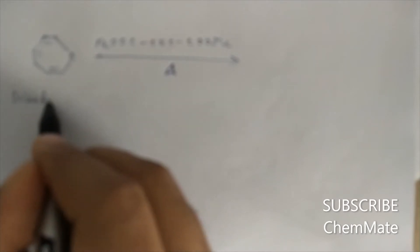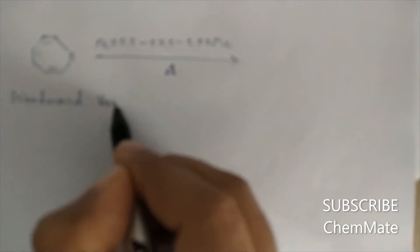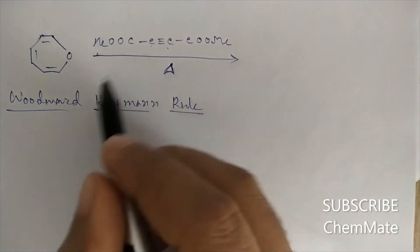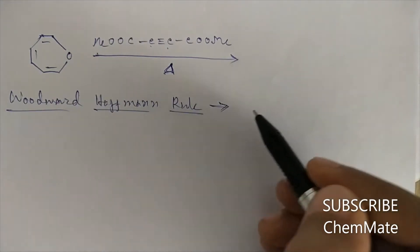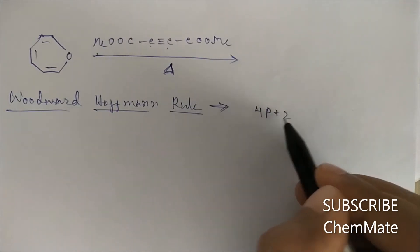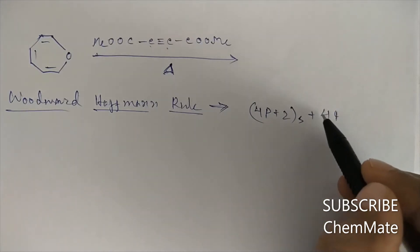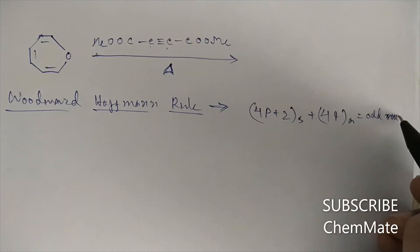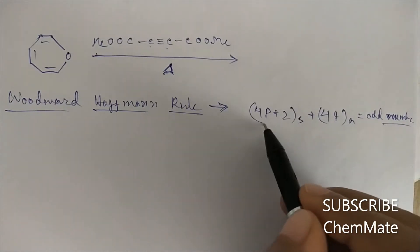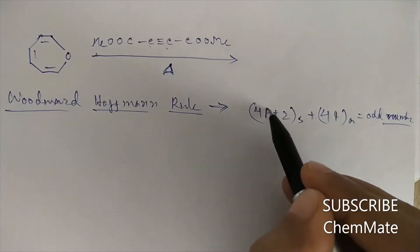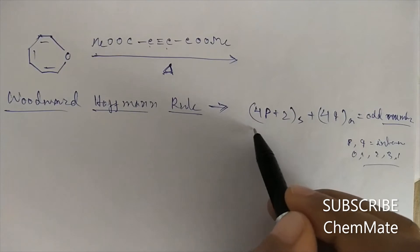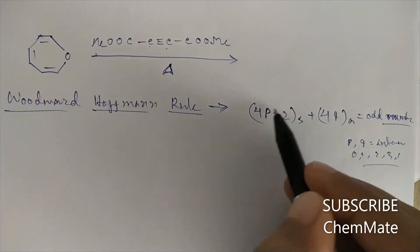The Woodward-Hoffmann rule tells us that 4p plus 2 and 4q, where the sum equals an odd number. Here p and q are integers — 0, 1, 2, 3 — and 4p plus 2 represents the number of electrons in one component.